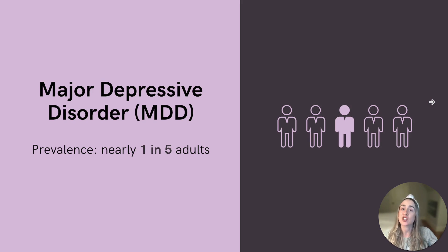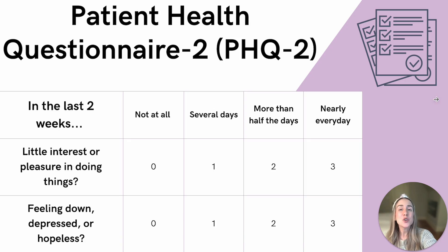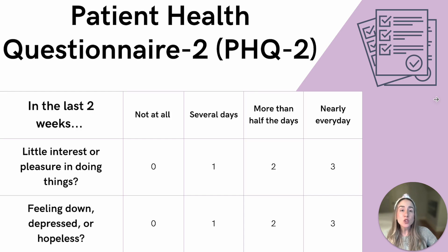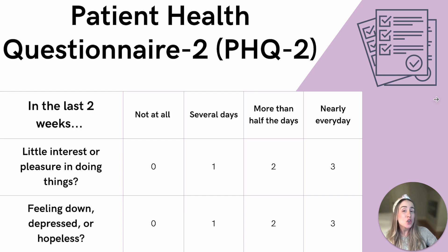This means we should be screening for depression in our adult patients routinely. A quick screening tool that can be used is the two-item Patient Health Questionnaire, or the PHQ-2. The PHQ-2 is a two-question screening tool to assess symptoms of depression. The patient will score how often in the last two weeks they felt little interest or pleasure in doing things, and how often they felt down, depressed, or hopeless. A positive screen with a score of three or greater warrants further assessment, like the PHQ-9.